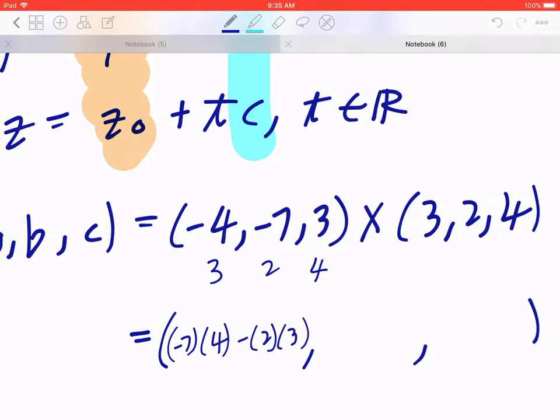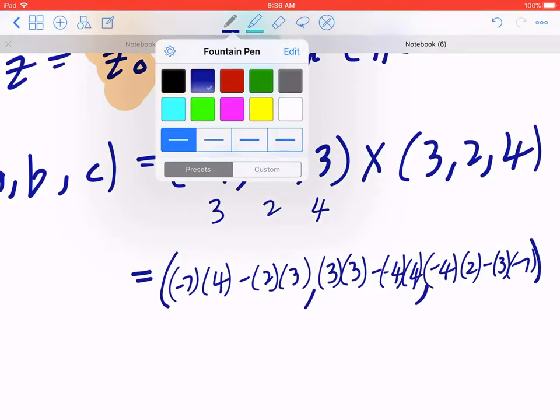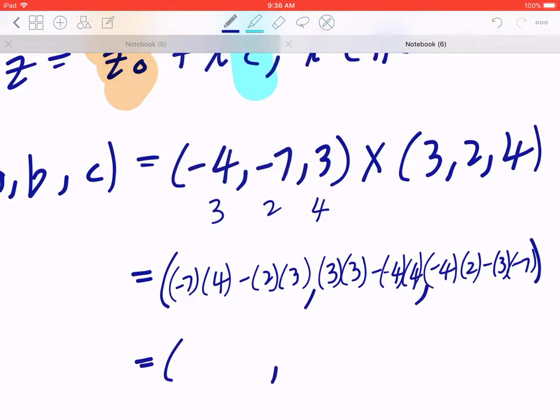If you look at the last component, it's going to be (-4)(2) - (3)(-7). In the middle column, it's going to be the opposite, so it's going to be (3)(3) - (-4)(4). You can work this out with a calculator or with mental math. In the first component, that's going to give you -28 - 6, which is -34. The second component is 9 + 16, which is 25. And the last component is -8 + 21, which will give you 13.